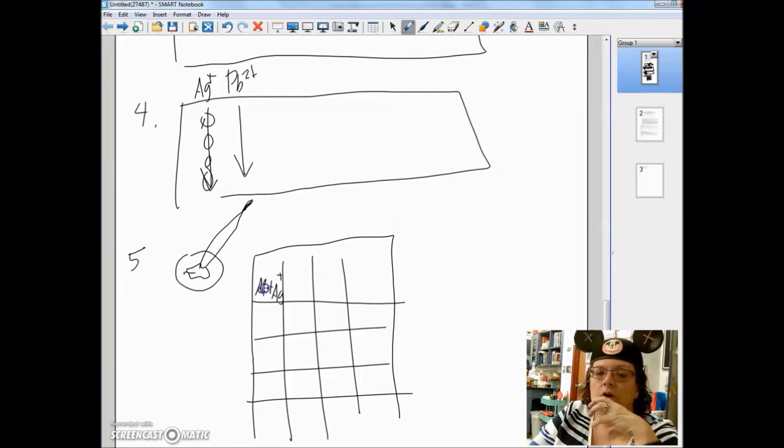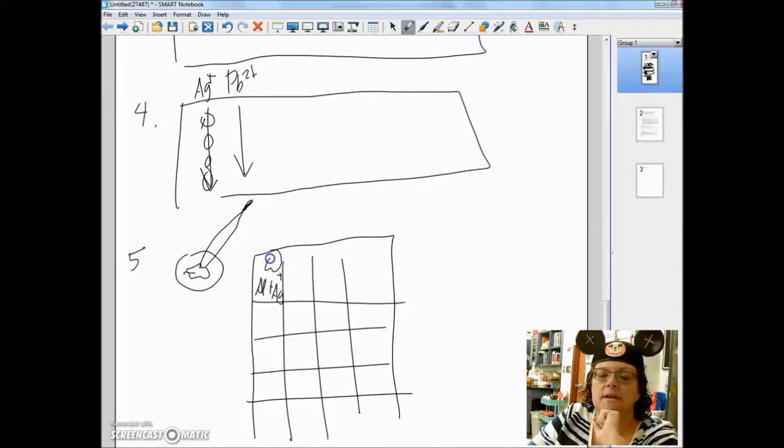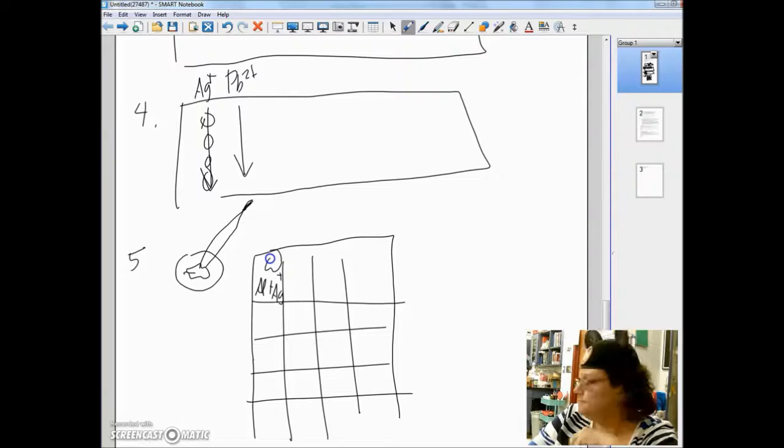Make a data table in your lab notebook and you can write down whether there was a reaction or not. And I would put the little piece right above it so you can see what was happening.